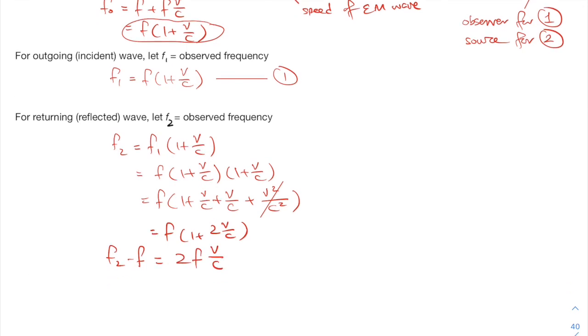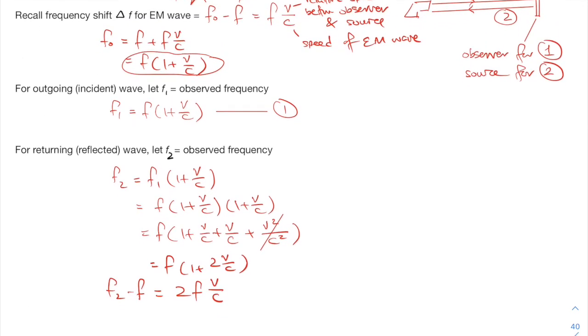And notice that F2 minus F is actually the total frequency shift for the radar gun. And this function is actually double of this function. So the total frequency shift for radar gun is actually twice that for a single incident EM wave.